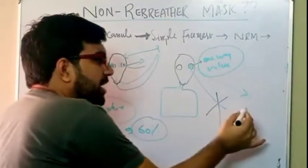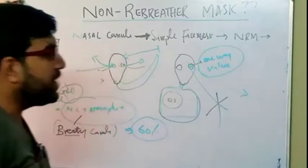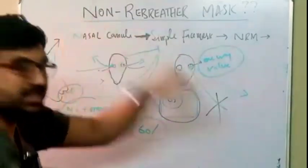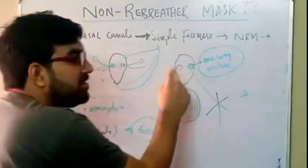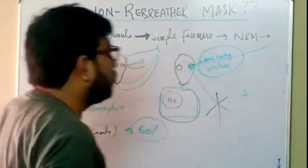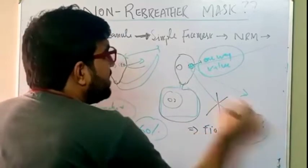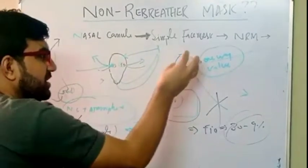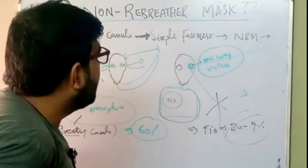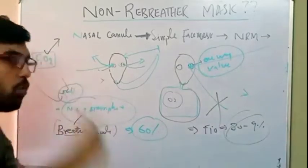With a valid non-rebreather mask, the person can exhale, but when inspiring the valves are closed — so there is no interference from the environment. We also attach a large reservoir of oxygen. Because we have decreased interference from the external environment, we are breathing solely from the oxygen source. The FiO2 in this case is almost 80 to 90 percent — not 100 percent — because of the dead space inside the human body: the nasal passages, trachea, and bronchi, where mixing of air still occurs.